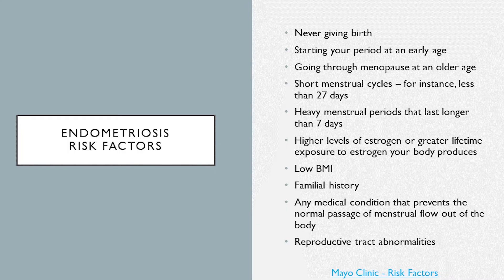Risk factors in endometriosis: a big part is having extra or higher levels of estrogen in your body. Risk factors include never giving birth, starting your period at an early age, going through menopause at an older age, having short menstrual cycles — for instance, less than 27 days — or heavy menstrual periods that last longer than 7 days. These factors reflect a greater lifetime exposure to estrogen on your body.